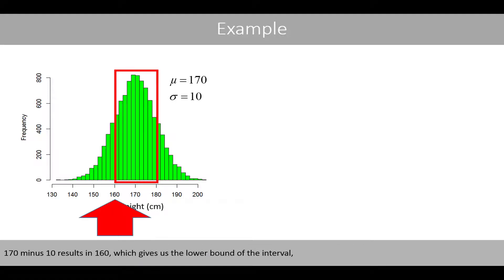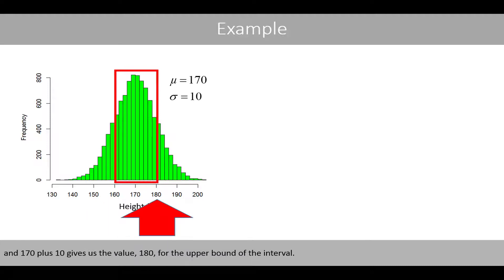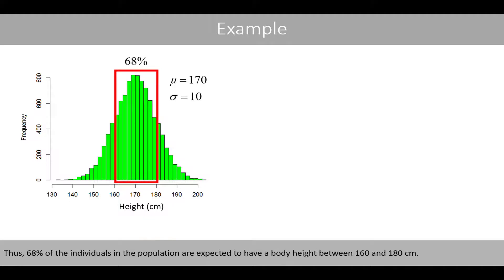170 minus 10 results in 160, which gives us the lower bound of the interval, and 170 plus 10 gives us the value 180 for the upper bound of the interval. Thus, 68% of the individuals in the population are expected to have a body height between 160 and 180 centimeters.